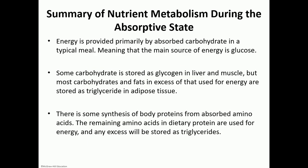Summary of the absorptive state: in order to get energy, the main source of energy in the cells after a meal would be glucose. Any excess glucose is stored as glycogen in your liver or muscle. When glycogen stores are full, extra glucose is changed into fatty acids and glycerol, made into triglyceride, and stored in the adipose tissue. Amino acids are used to build protein. These functions are under the effect of insulin.